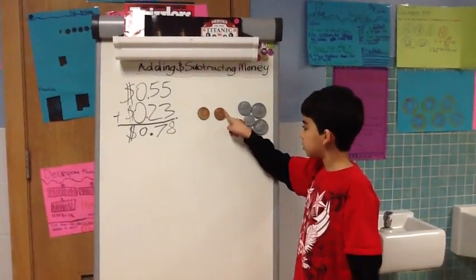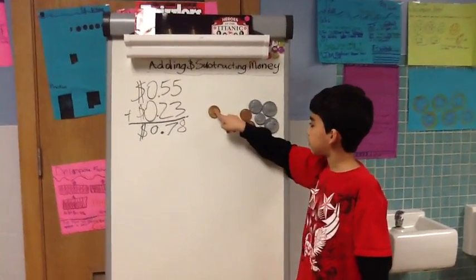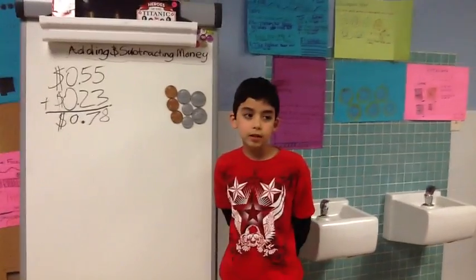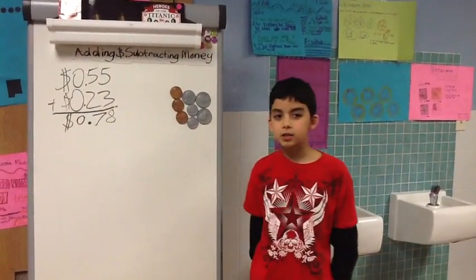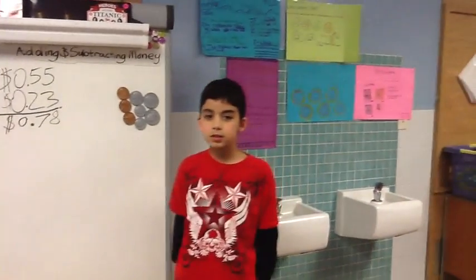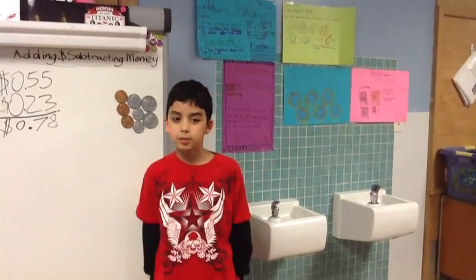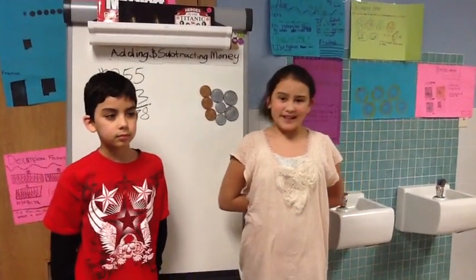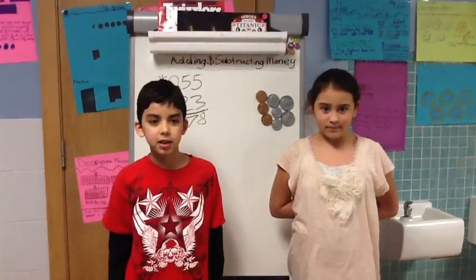76, 77, 78. We got 78 for our answer with both the coins and the algorithm, so we got the right answer. That was your easy model showing you how to add money, and after this we're going to show you a harder problem.